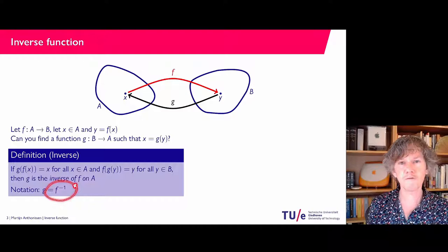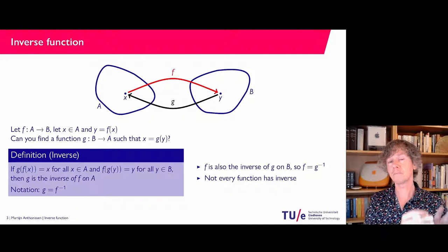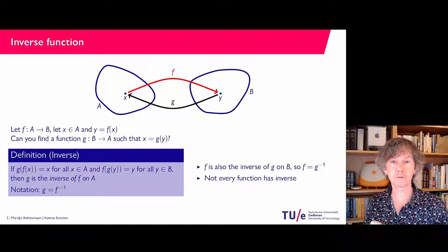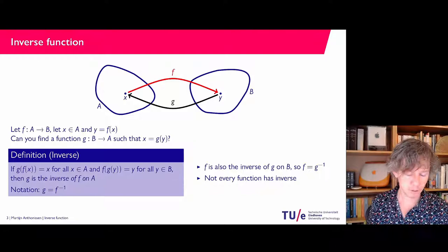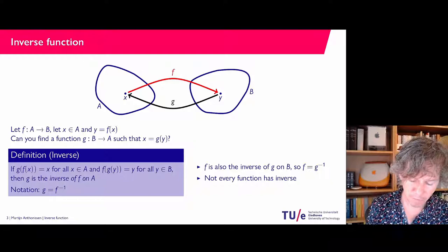Note that you might be tempted to think that f⁻¹ means 1 over f, but that is not the same — 1 over f is not the same as the inverse of f. F is also the inverse of G, so f is G inverse. And as I said, not every function has an inverse. If you think of a student mapped to his or her age, you cannot go back, because there are many different students who are, say, 18 or 19 years old.